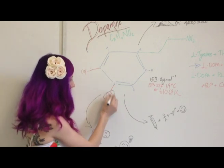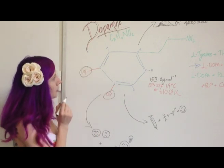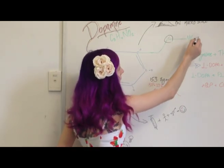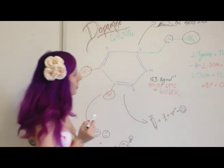You've got two alcohol groups, also known as hydroxyl groups, up here. You've got a central carbon chain up here, and then you've got an amine group up the top.